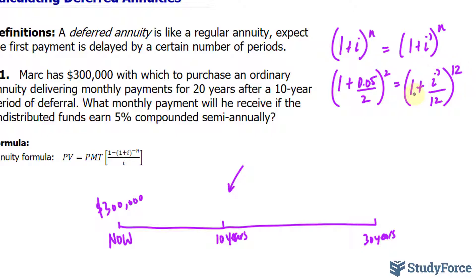And by solving for i prime, we have found the interest that we'll be using to find out the future value 10 years from today. We will take both sides to the 12th root, and if I take the 12th root on the right side, it cancels out this exponent, leaving us with 1 plus i prime over 12.